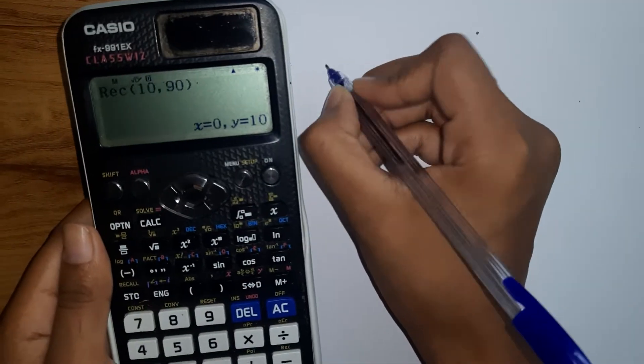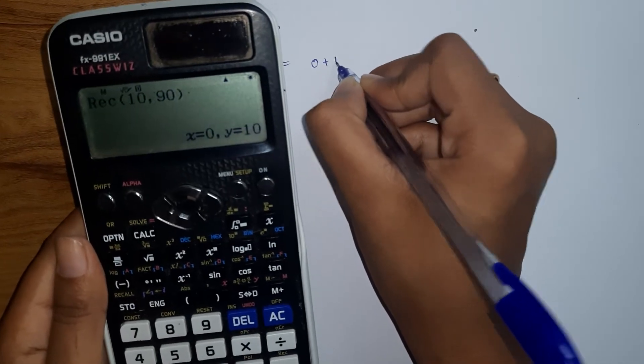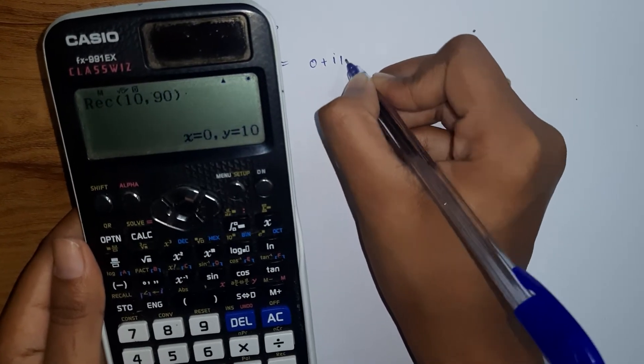So that is a plus ib form. What is that? Zero plus i times 10.